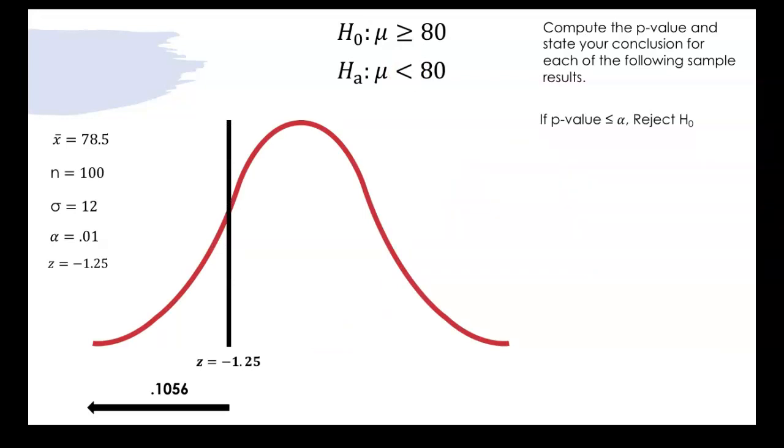So now we can figure out what our conclusion would be. So the rule that we have is that if the p-value is less than or equal to alpha we reject the null. So our p-value is 0.1056, our alpha is 0.01, and so since our p-value is greater than alpha we do not reject the null hypothesis.